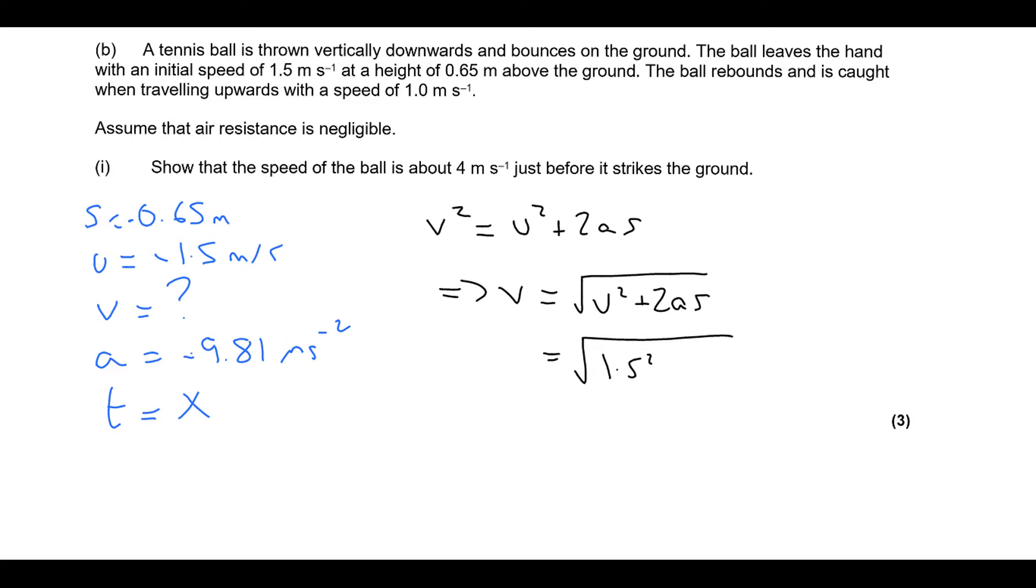And then just substitute in the values. 1.5 squared plus 2 times, sorry it's minus 1.5 all squared, 2 times minus 9.81 times minus 0.65. And when we put that into our calculator, we're going to get... And we're going to end up with two solutions to this because it's square root. But remember it's downwards, so it's going to be the minus solution. So it's going to be minus 3.9 metres per second to two significant figures there. And that would be your answer.